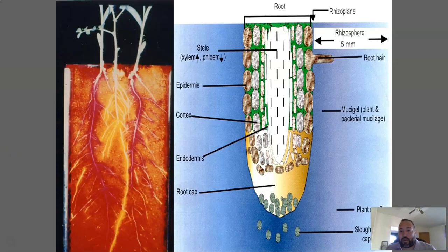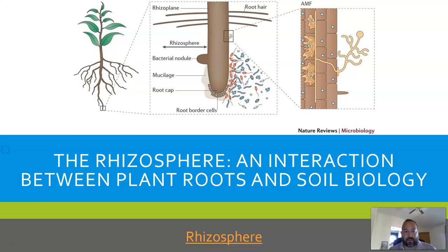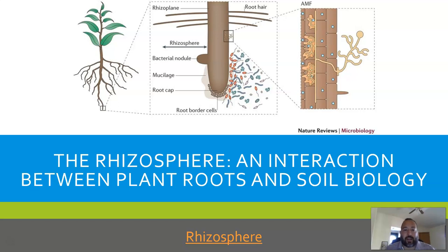Looking at a diagram of the rhizosphere, the blue area represents it, showing root hairs, epidermis, and root cap. On the left is what it actually looks like as a plug — the orangish-reddish color is the soil, and you can see the plant with its tap root and lateral roots merging into the soil. Make sure to pause and click the link on the lecture slides to watch the rhizosphere video.